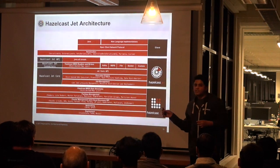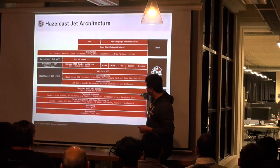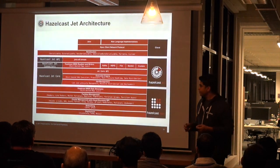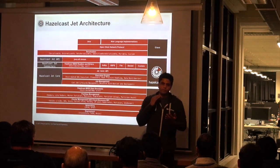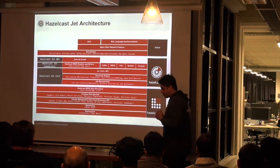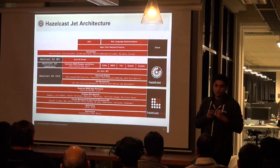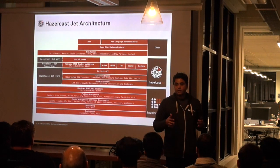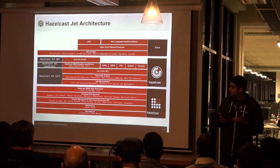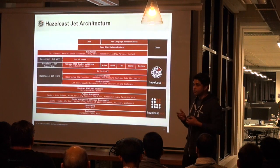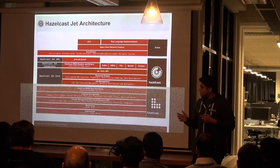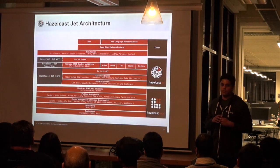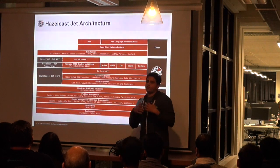Looking at the Hazelcast Jet architecture: starting from the bottom, Jet can be deployed on any operating system — Linux, Unix, Windows. Hazelcast Jet processes are Java processes, supporting OpenJDK, Oracle, IBM, and others. Jet can form a cluster using different topologies: TCP/IP, multicast UDP, Apache jclouds, AWS, Consul, ETCD, Eureka. You can also deploy Hazelcast Jet cluster on Cloud Foundry, and there are various other infrastructure options available.